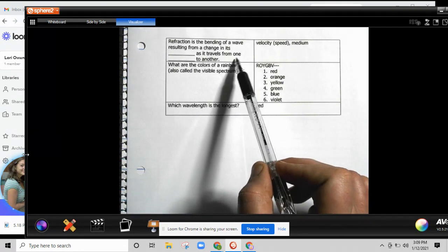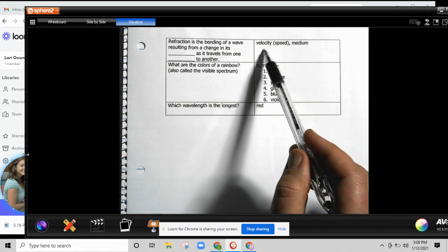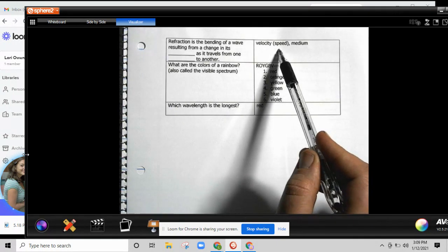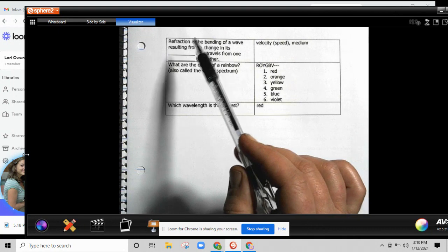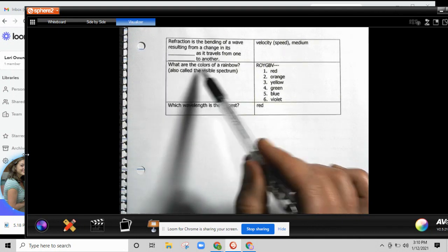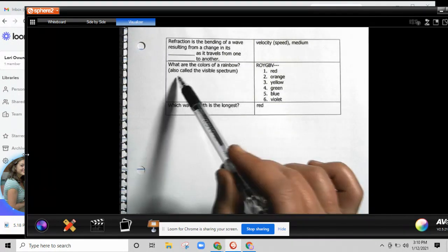What are the colors of a rainbow also called? The visible spectrum. ROY G BIV: red, orange, yellow, green, blue, indigo, violet.